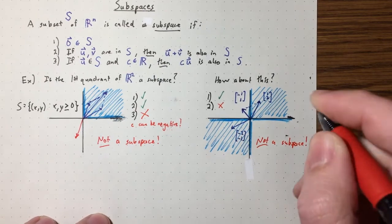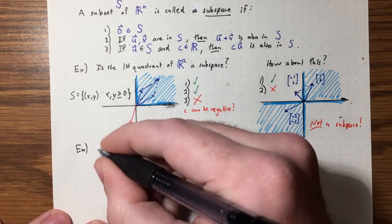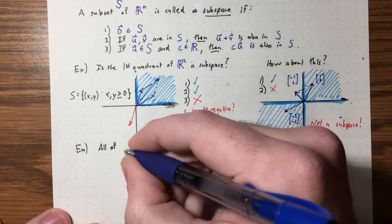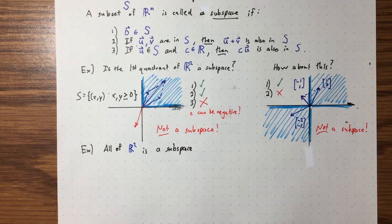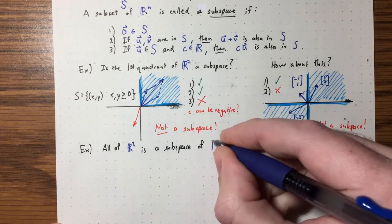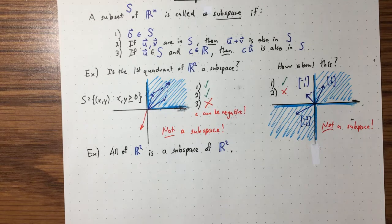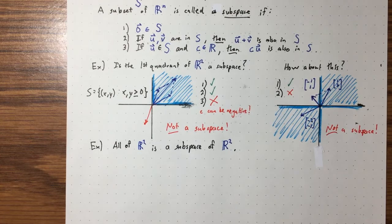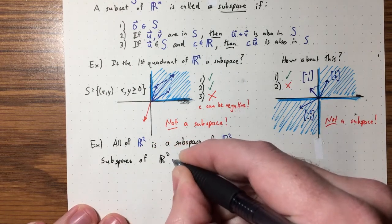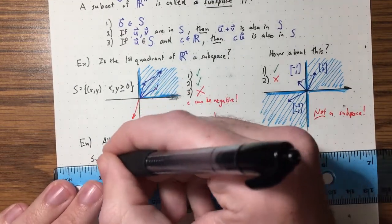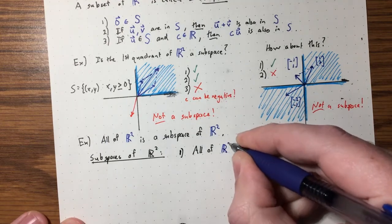So this is not looking good — it seems like nothing is a subspace. Well, I can tell you one subspace: all of R² is a subspace. If we add two things in R², we're never going to go outside of R², so that's a subspace of R².